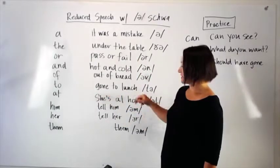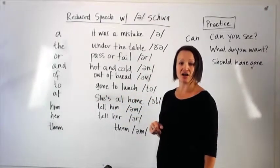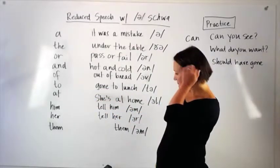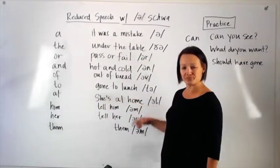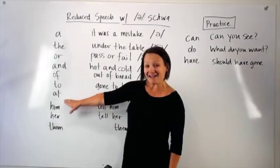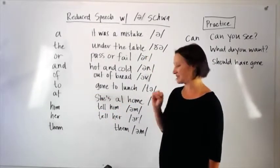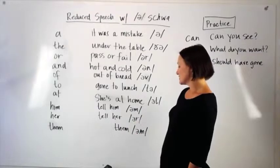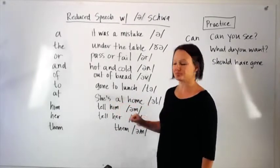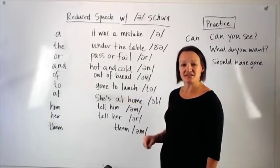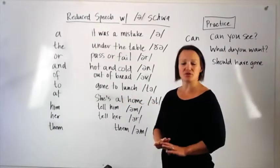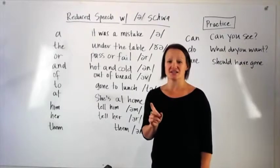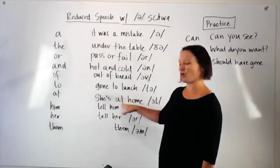To. Gone to lunch. It changes from to to tuh. At. She's at home. So it went from at to it. A very short quick sound. Because it's not an important word in the terms of understanding what you're saying in the sentence. Sometimes with this t in the final position of a word like this we don't even say it. Check out the other video I have about the ways to pronounce the letter t in American English.